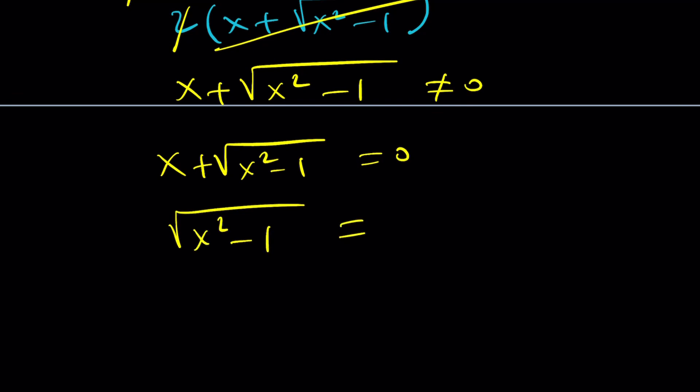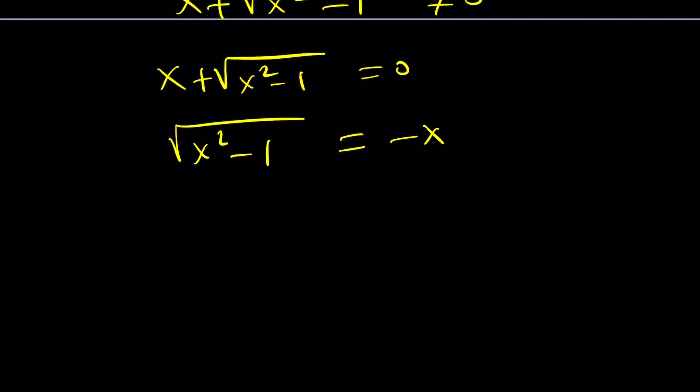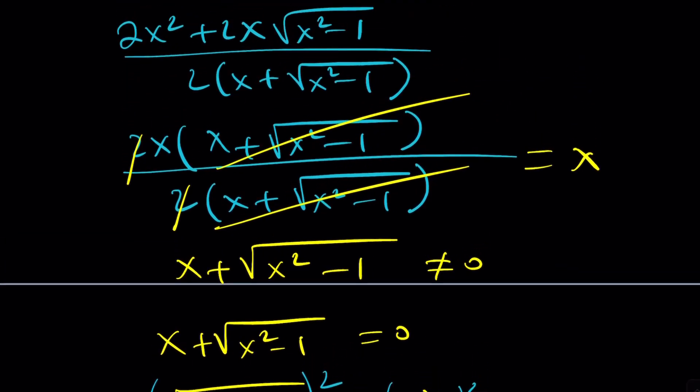Square root of x squared minus 1 equals negative x. Square both sides. You're going to get x squared minus 1 equals x squared, which is impossible because, as you know, hopefully, negative 1 does not equal 0. So this is impossible. So it's automatically satisfied.